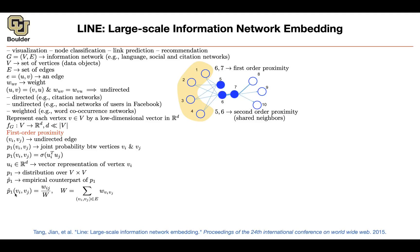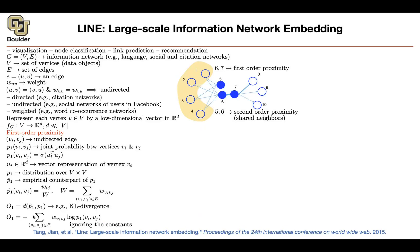The empirical counterpart p̂_1 uses the edge weight — for instance, the weight between six and seven is stronger than between seven and eight, shown by the thickness of the edges. You take that weight and divide by the global weight W (the sum of all edge weights). Once you write the KL divergence formula and ignore constants, you end up with something that looks like cross-entropy.